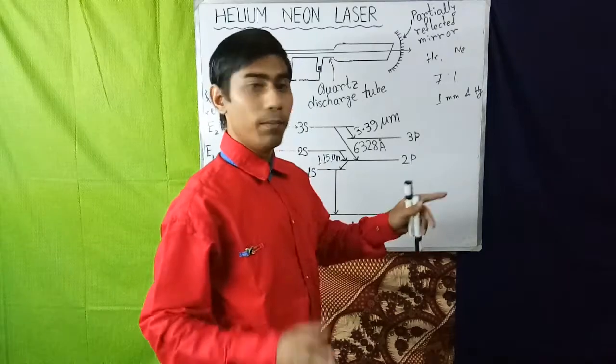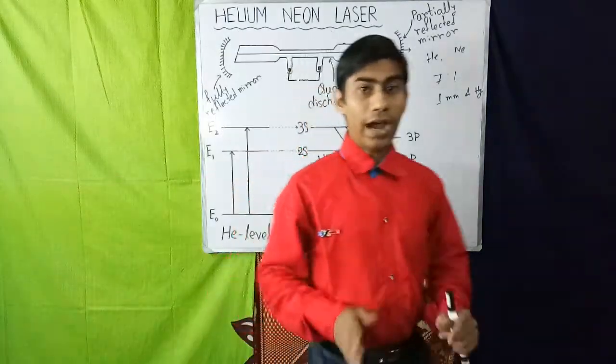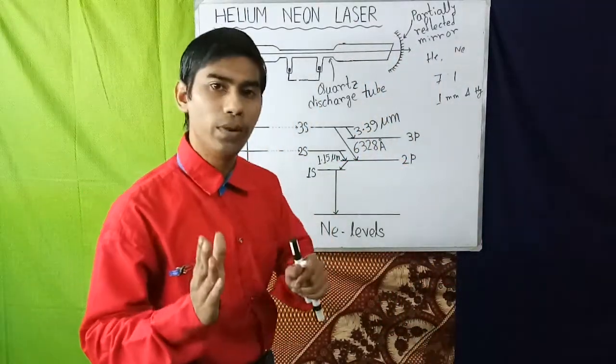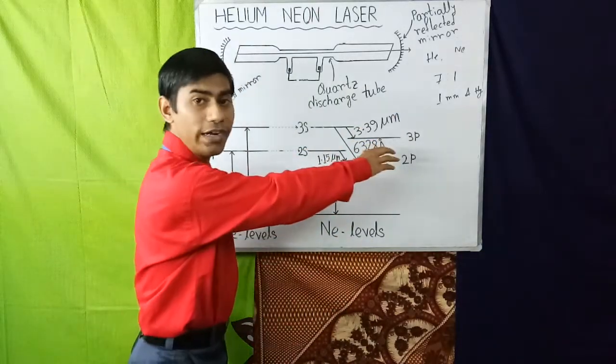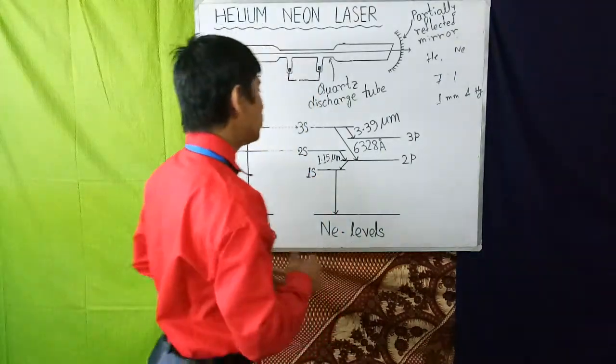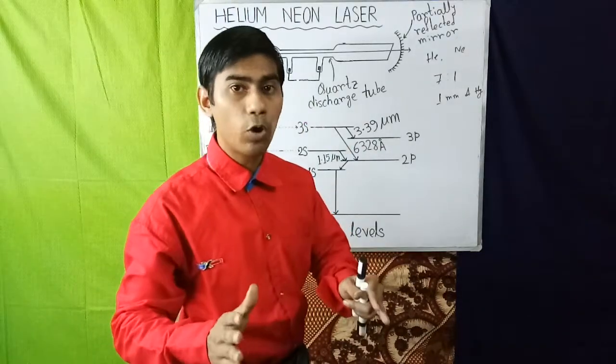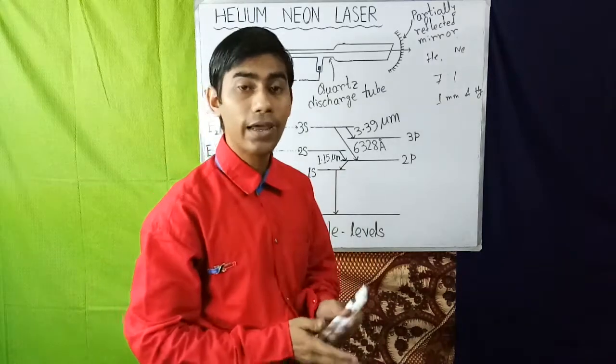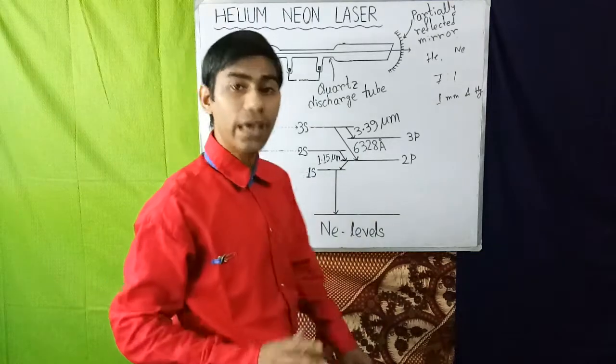Now we see here that this transition consists of three wavelengths: 3.39 micrometer, 6328 angstrom, and 1.15 micrometer. Now of the three wavelengths, the quartz tube absorbs the wavelength 3.39 micrometer and 1.15 micrometer, and only a photon of 6328 angstrom will be emitted.